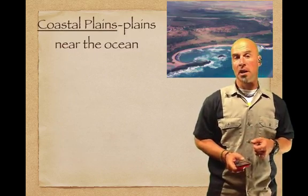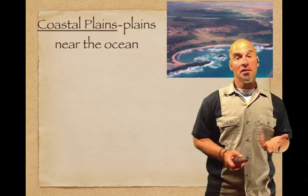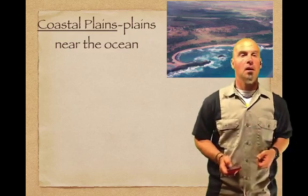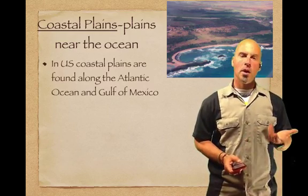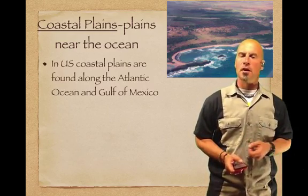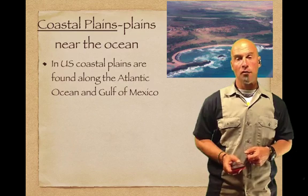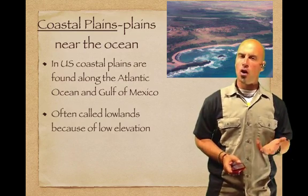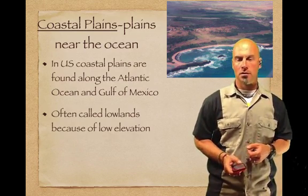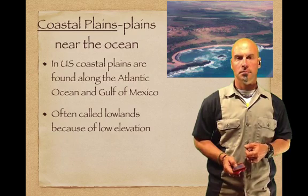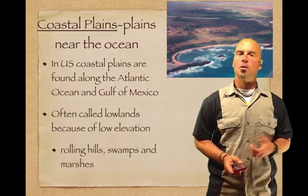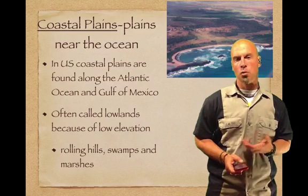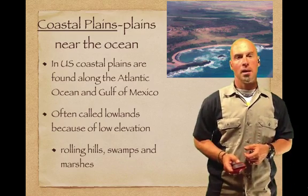Coastal plains are plains that are near the oceans. In the U.S., coastal plains are found along the Atlantic Ocean and the Gulf of Mexico. They're often called lowlands because of their low elevations, and they're characterized by rolling hills, swamps, and marshes.